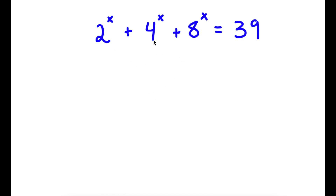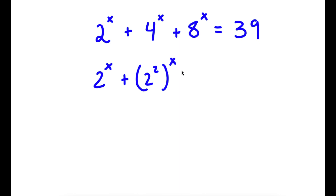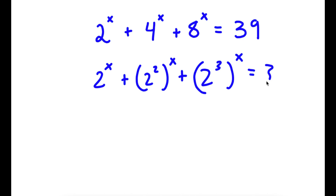In this problem, I have 2 to the power of x plus 4 to the power of x plus 8 to the power of x is equal to 39. To solve this, I'm going to first rewrite this as 2 to the power of x plus 2 squared to the power of x plus 2 to the power of 3 to the power of x is equal to 39.